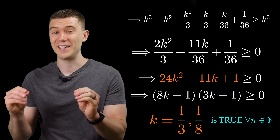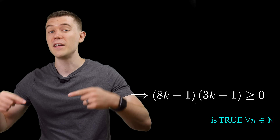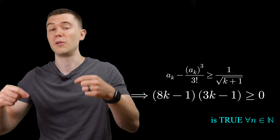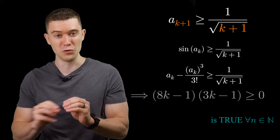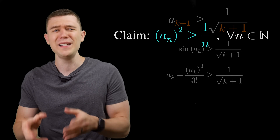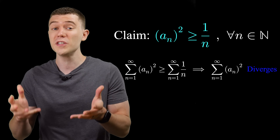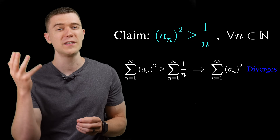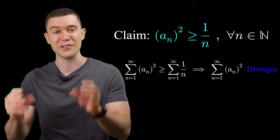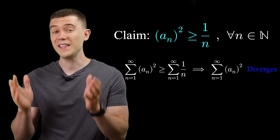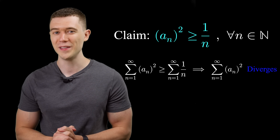So we showed the inequality holds for all k in the natural numbers, which implies each induction step, completing the proof by induction. The sum of a sub n squared is greater than or equal to the sum of 1 over n, which is the harmonic series — a divergent p-series with p equals 1. The conclusion is that our series diverges. If you like these Putnam exam questions dealing with infinite series, check out the linked video. See you there!